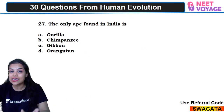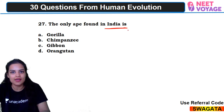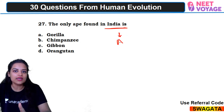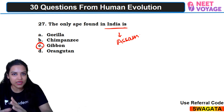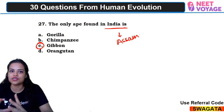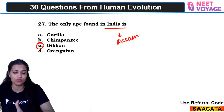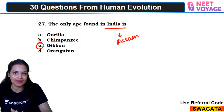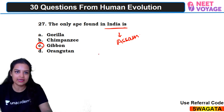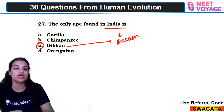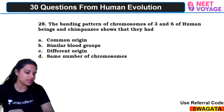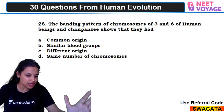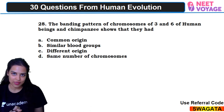Twenty-seventh question: the only ape found in India is what? Among all the apes, only one is native to India — the gibbon, found in the jungles of Assam. Gorilla, chimpanzee, and orangutan are found in zoos but are not native to India. So C — gibbon — is the right answer. Divyansh and Ram Prasad answered correctly.